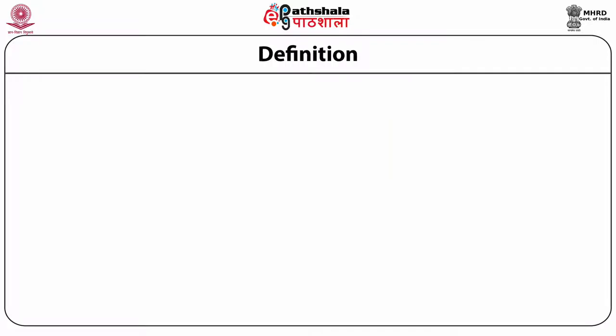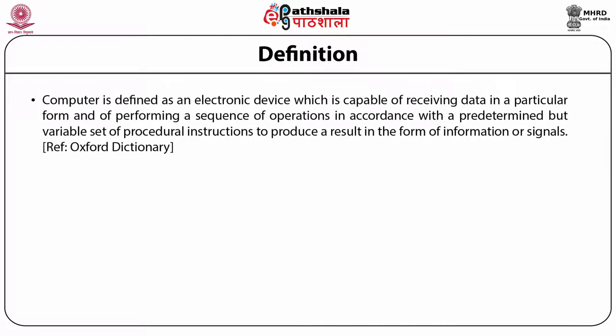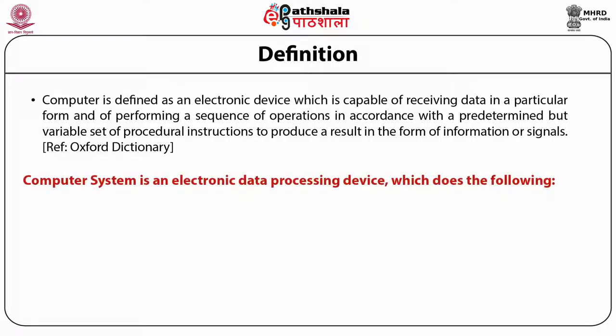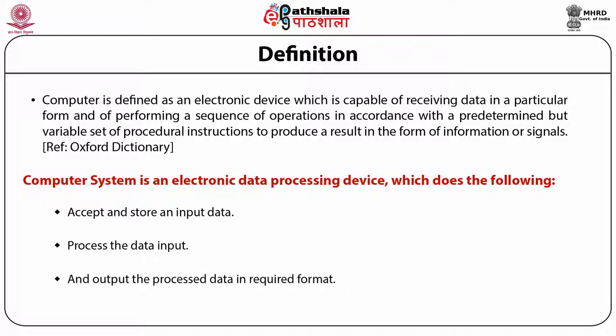Oxford Dictionary defines computer as an electronic device which is capable of receiving data in a particular form and of performing a sequence of operations in accordance with a predetermined but variable set of procedure or instructions to produce a result in the form of information or signals. Computer system is an electronic data processing device which accepts and stores input data, processes the data input and outputs the product.